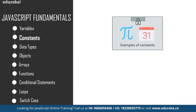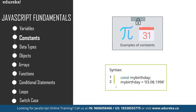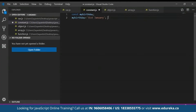Constants are fixed values that do not change during execution time. To declare a constant in JavaScript, we use the const keyword. Here I have an example to declare a constant — you just use the const keyword and then provide a constant value to that variable. It's very easy to declare a variable and a constant in JavaScript.